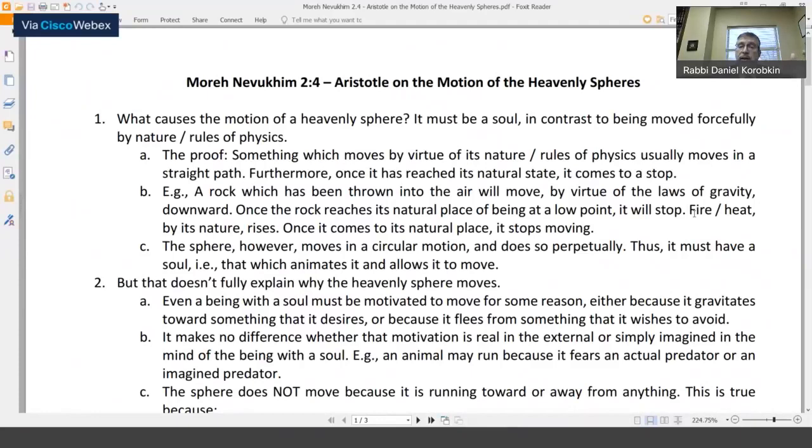Another example is fire or heat. By nature, rises. Once it comes to its natural place of being in as high of a place as it can possibly reach, it stops moving. So what you expect from something that moves by virtue of its nature or by virtue of the fact that it needs to move because it has been caused to move by science or by its nature is that eventually when it comes to its natural place of rest, it comes to a rest. The sphere, however, that exists in the heavens moves in a circular motion and does so perpetually. So it does not move in a straight line. It moves in a circular way. Furthermore, it never comes to a stop. And those two factors indicate to the Rambam that it must have a soul, something within it that animates it and allows it to move.